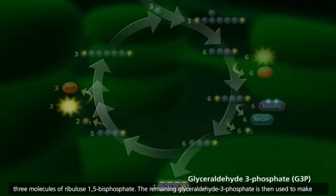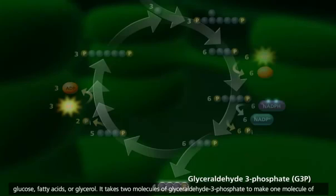The remaining glyceraldehyde-3-phosphate is then used to make glucose, fatty acids, or glycerol.